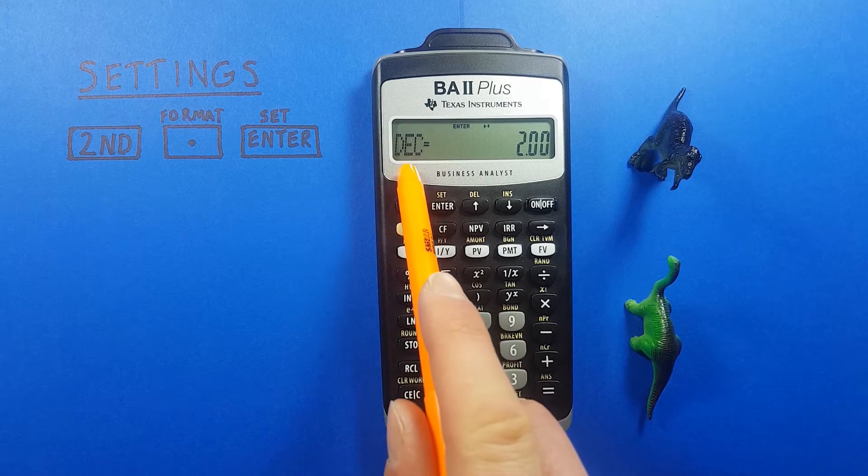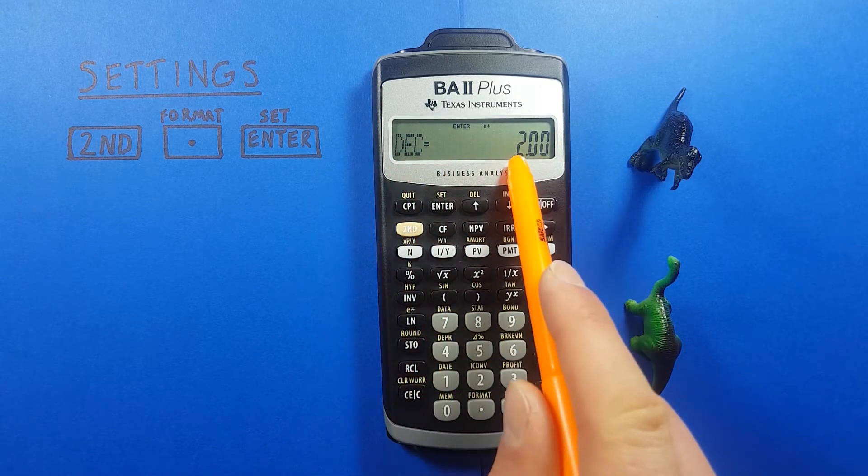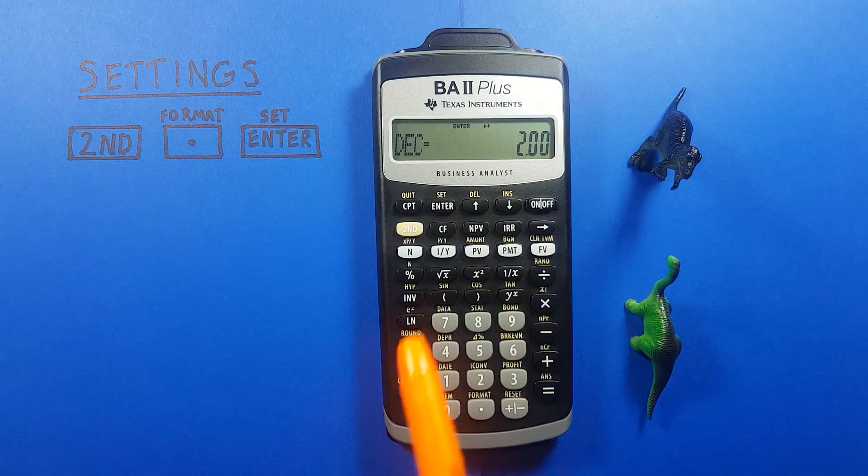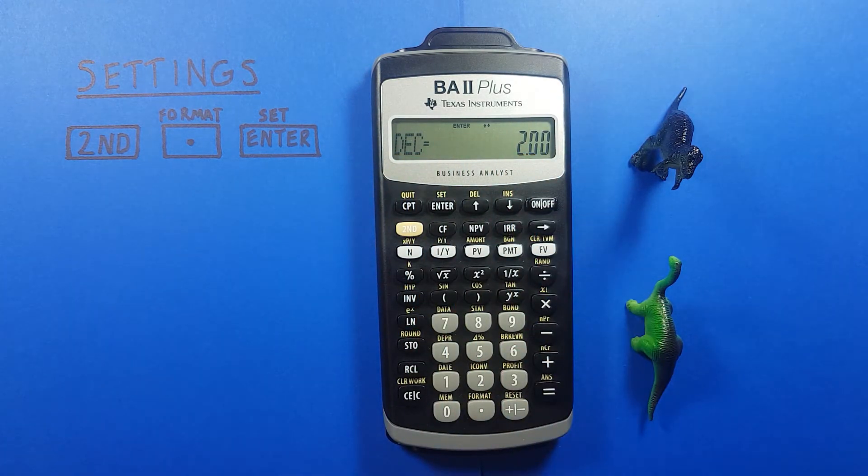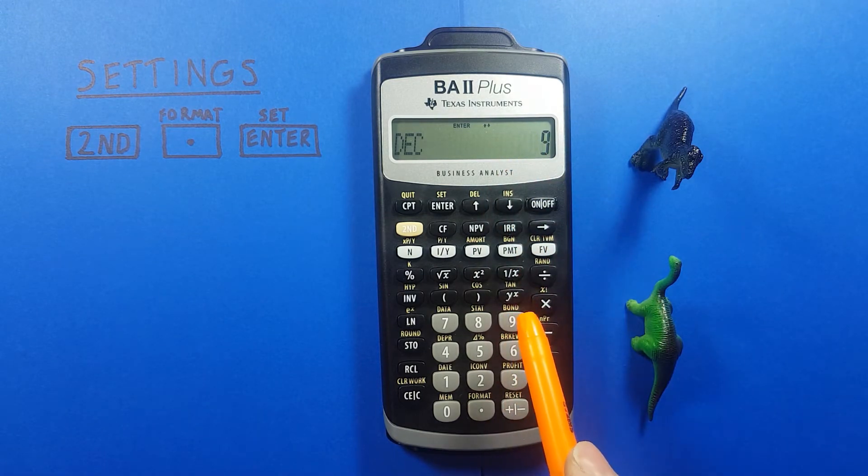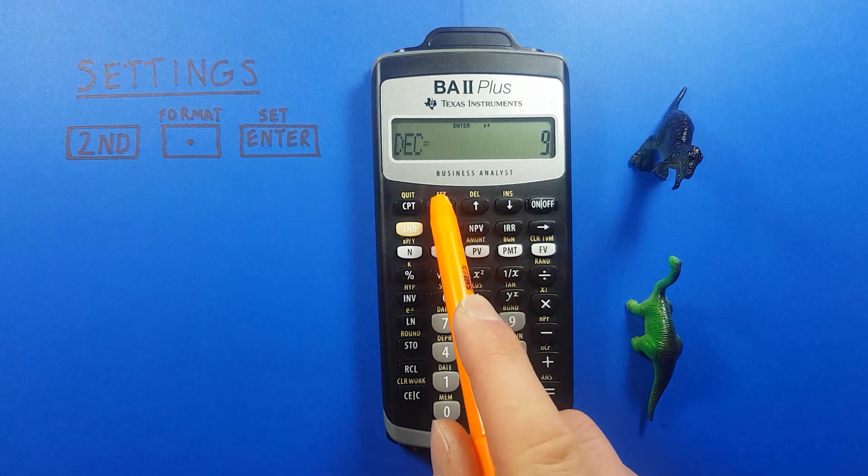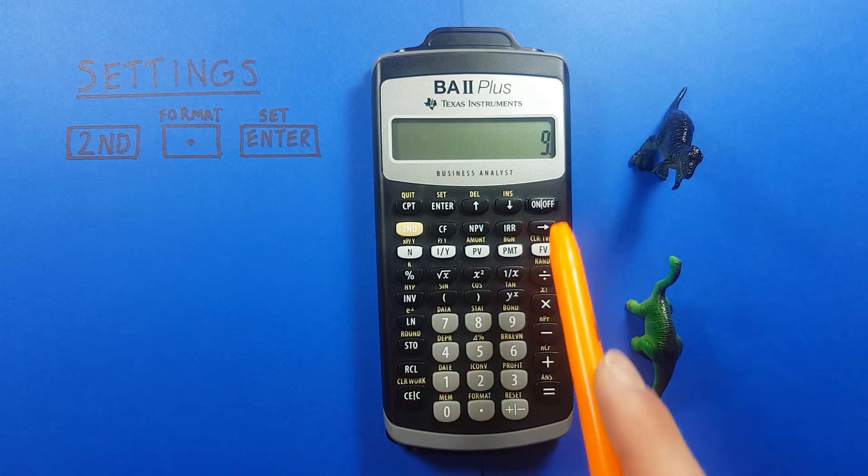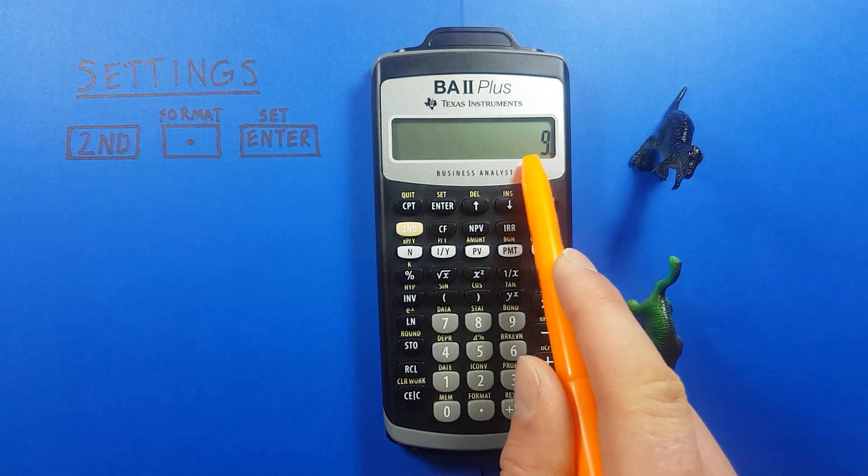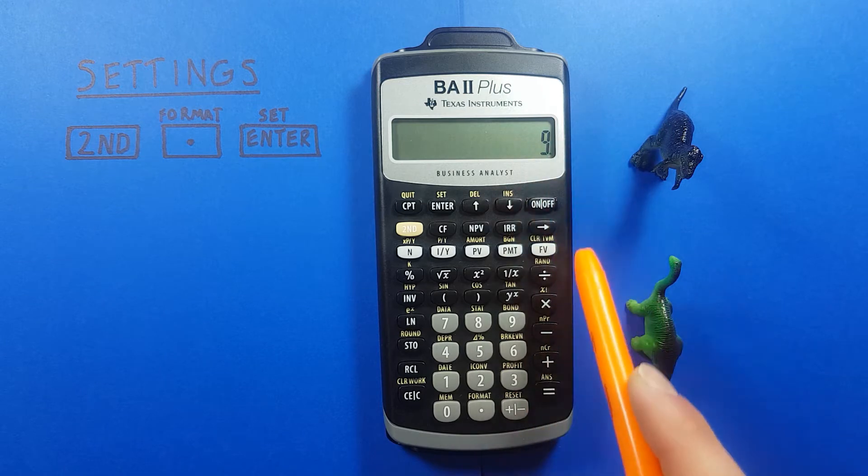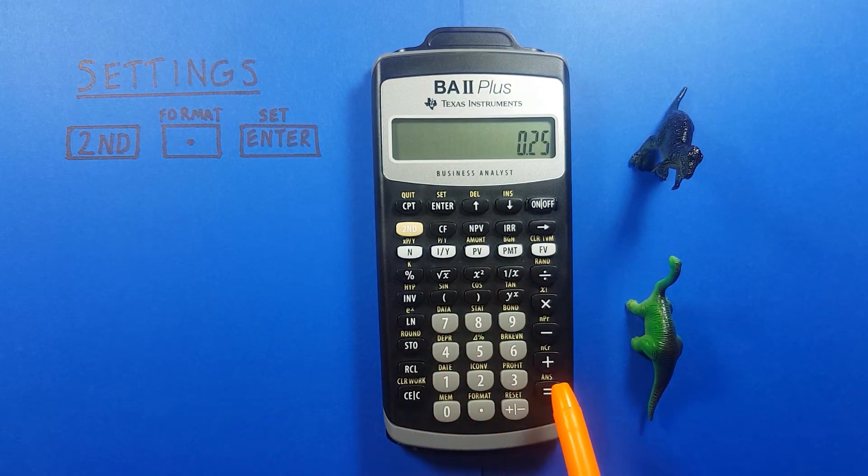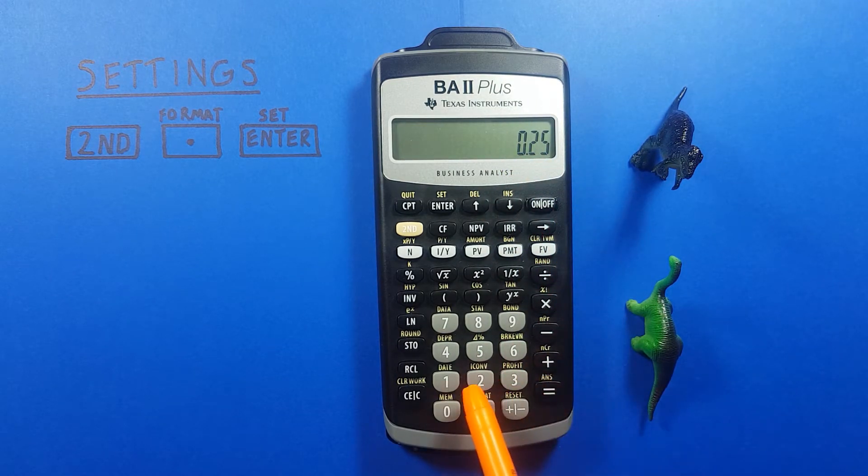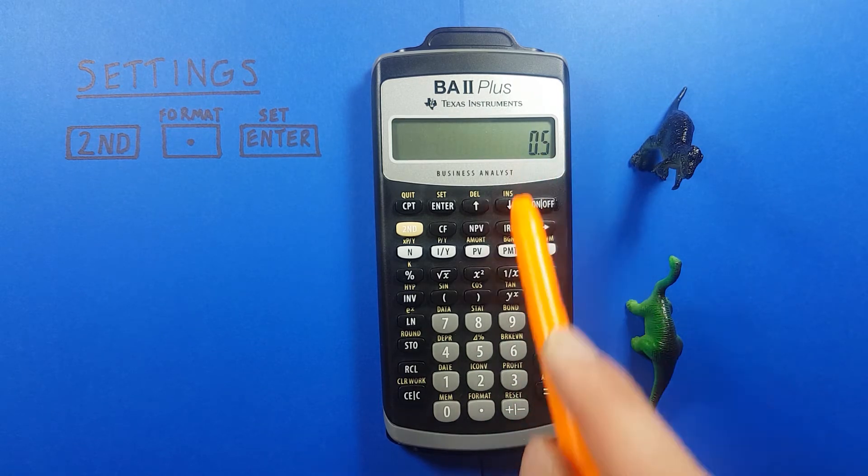Our first option is DEC for decimals and it's set to two right now. This is where we can set the number of decimals that appear after a number on our screen. If we want to set it to a floating number you can press 9 and then press enter and then we hit clear. In this case we'll only get as many numbers as we need. So if we go 1 divided by 4 we get two decimals but if we get 1 divided by 2 we only get 1 because that's how many we need there.